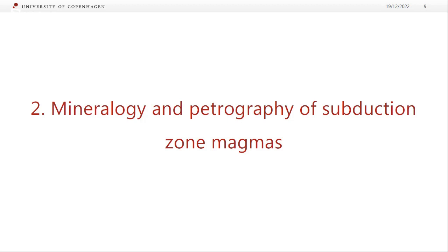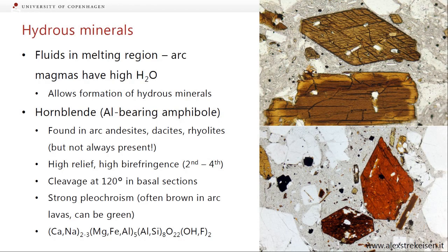Mineralogy and petrography of subduction zone magmas. Because we have fluids in the melting region, arc magmas end up having high water contents, and because of that we can form hydrous minerals — minerals that have structural hydrogen, usually OH minus groups. The first one is hornblende, which is not strictly a single mineral but a big group — basically an aluminium-bearing amphibole. It's found in andesites, dacites, and rhyolites, but it is not always present. It doesn't need to have hornblende to be an andesite.